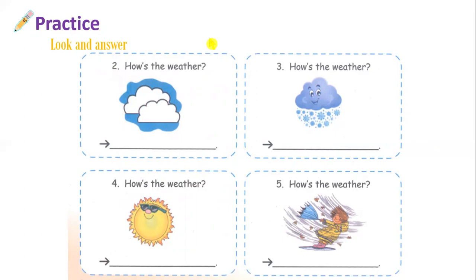How's the weather? Look at picture number two. Chúng ta nhìn thấy ở đây có những đám mây, tức là đây là dạng thời tiết có mây. Và cách trả lời, dạng thời tiết có mây là cloudy. Cách trả lời câu hỏi how's the weather là it's cloudy. So you will write it's cloudy.